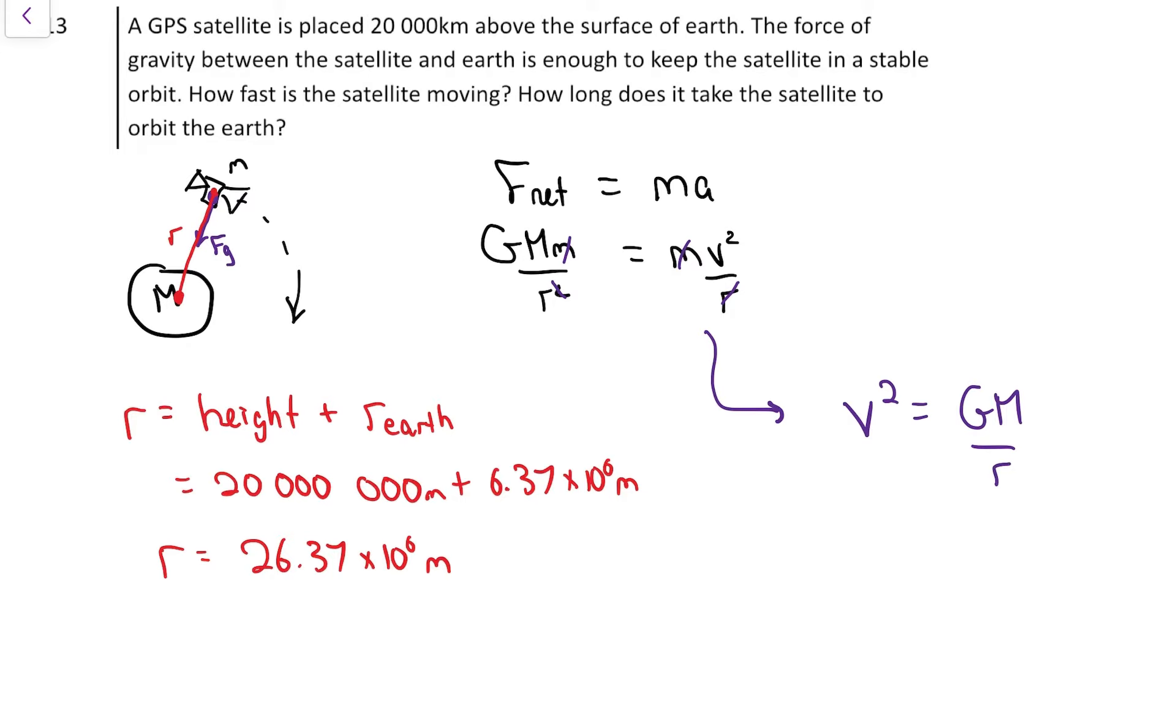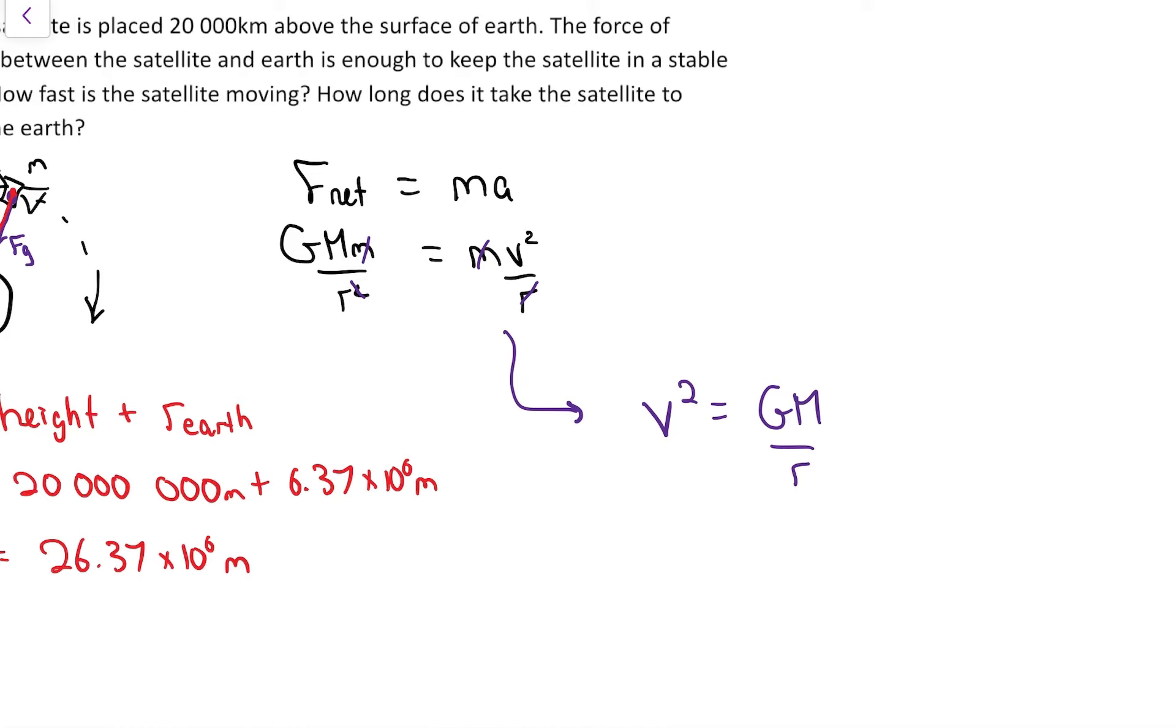That's a little function that connects the speed to the radius. Every GPS satellite, any satellite that's at that 20,000 kilometer height, they're all going to be going the same speed.